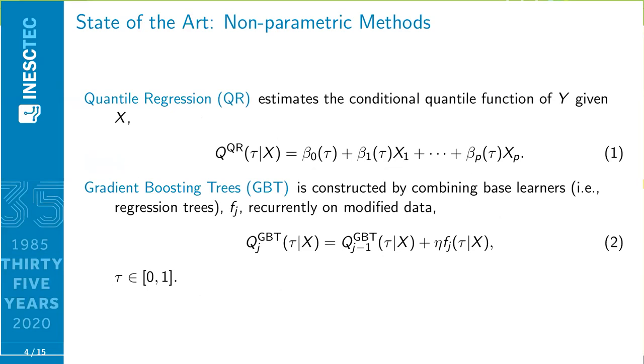A possible solution to fit the probability distribution of wind power production would be to model the intermediate quantiles with a non-parametric model and then the extreme quantiles with a parametric model. To summarize, in terms of non-parametric models, quantile regression and gradient boosting trees are two widely used methods. The linear quantile regression assumes a linear relationship between power and covariates, which is a strong assumption. On the other hand, the gradient boosting tree model, GBT model, allows capturing more complex relationships by combining regression trees recurrently on modified data. But as I mentioned before, these methods can achieve good performance for quantiles between 5% and 95%, but their performance for the tails is poor.